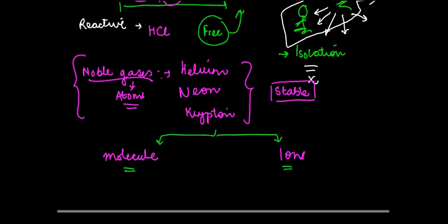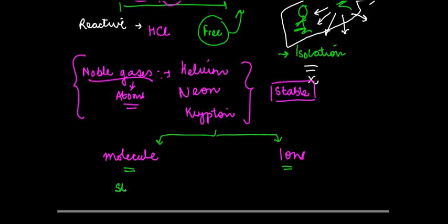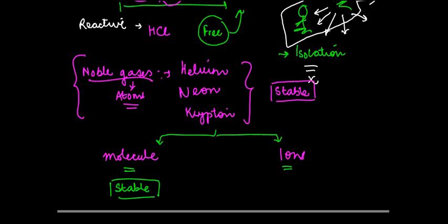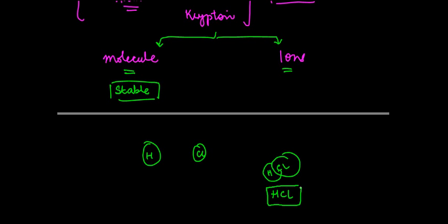Once they form either of these, they become stable. When I say what does this mean? This basically means that, you know, you had an atom of hydrogen, you had an atom of chlorine. Ultimately, what happened was, hydrogen and chlorine got together and formed hydrogen chloride. Once they got together and formed this, they become stable.